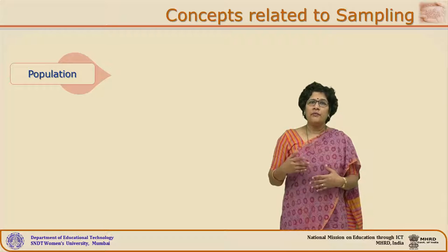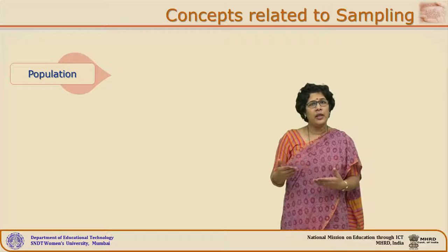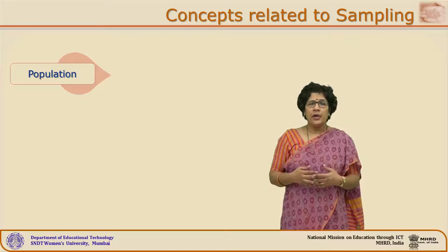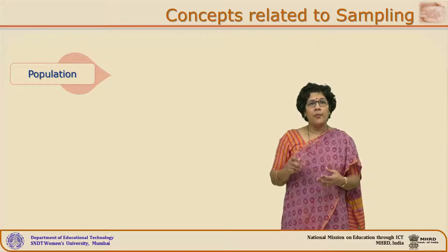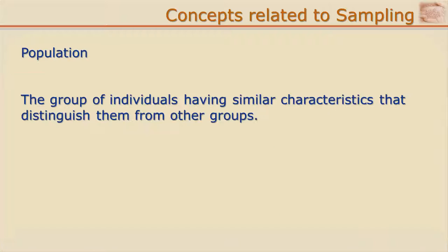Now in general we know the word population — we have heard it and have been using that word even in our daily life. Generally we use it for human beings and mankind of a particular nation or city. In the context of research, the word population is defined as the group of individuals having similar characteristics that distinguish them from other groups. The important terminology in this definition is the distinguishing characteristic — some feature which is common in that group of population units that makes them different from other populations.